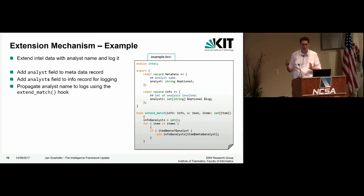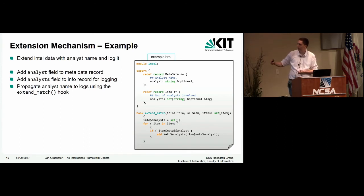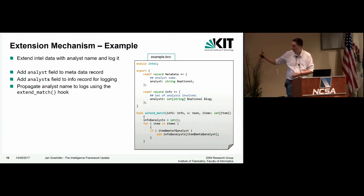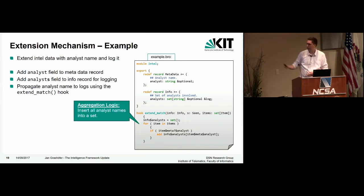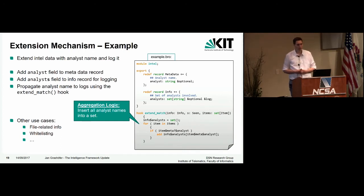Here's a simple example of extending: say we want to add an analyst name to the metadata we ingest and also have that information in the log file. We add the analyst field to the metadata record, add the analysts field to the info record, and fill out the extend_match hook to build up a set of all analysts involved. This extra information is then also logged. Other use cases include file-related info in the intelligence file and a whitelisting mechanism shipped with Bro, both implemented using that hook.